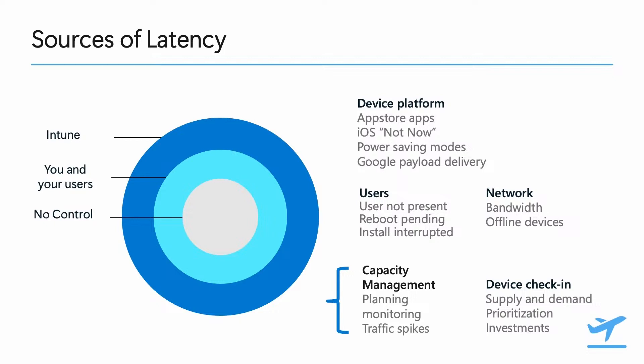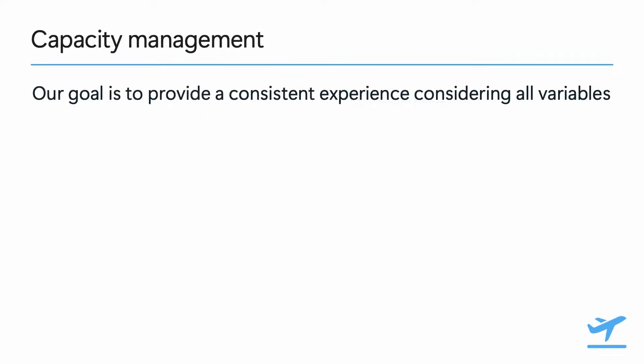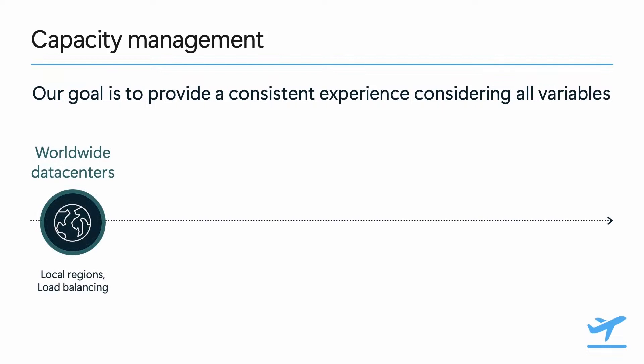In particular, I'll cover how we manage capacity and how we're handling check-ins. In terms of capacity management, our goal is to provide a consistent experience over time as both our service and customer needs evolve. Intune runs on tens of data centers around the world, and we are constantly evaluating demand and adding capacity as needed. As we add new data centers, we often rebalance the load in current data centers and free up resources in the form of additional capacity to process more check-ins.